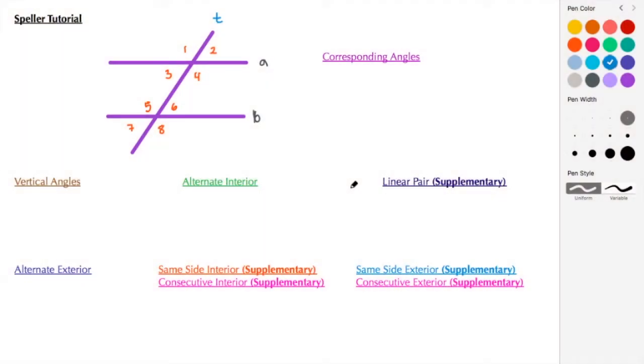In today's tutorial we're going to talk about the relationship of the angles created by a transversal that intersects two parallel lines. Here the parallel lines are a and b, or in this case they're segments, and the transversal is segment T.